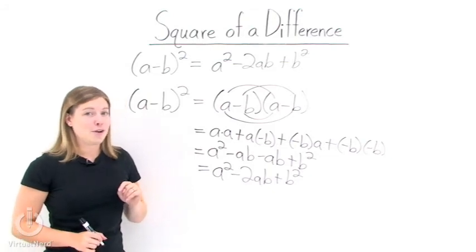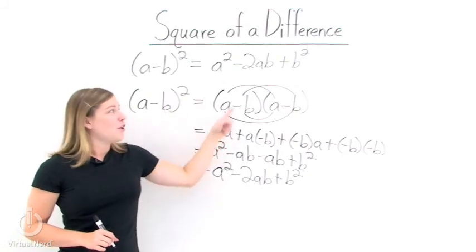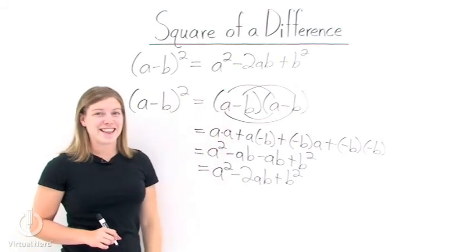So if you get a binomial that looks like this, a minus b squared, rather than FOILing it, you can just use this formula to get the answer.